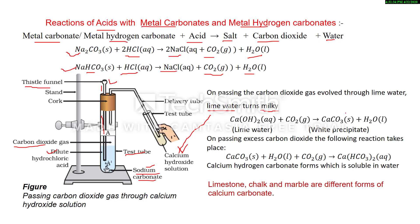It turns milky due to the formation of insoluble calcium carbonate, which appears in the form of a white precipitate. So when carbon dioxide gas is passed into lime water, lime water turns milky due to the formation of insoluble calcium carbonate.